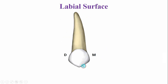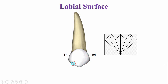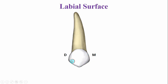Looking at the labial aspect, this is the cusp tip, which is sharp compared to the permanent canine. The shape of the crown is diamond in shape. The width of the crown is slightly more as compared to the length of the crown.